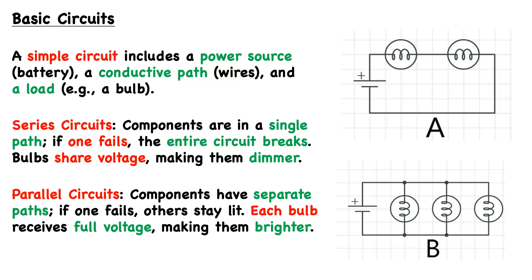The conductive path — the wires — is typically illustrated as simple straight lines. And then we have the load, our power-drawing component. In these diagrams, we have bulbs as the load: in diagram A we have two bulbs, and in diagram B we have three.